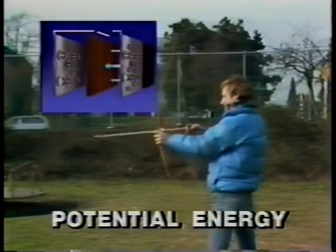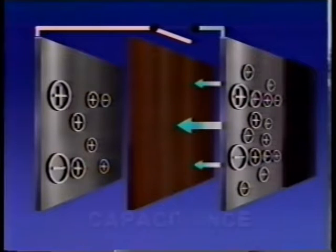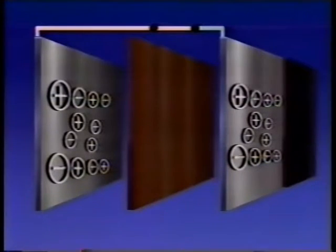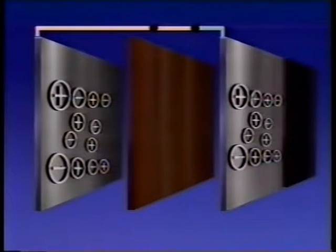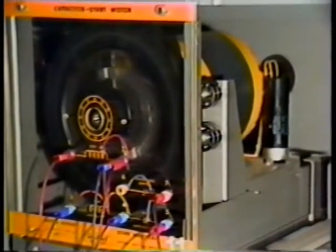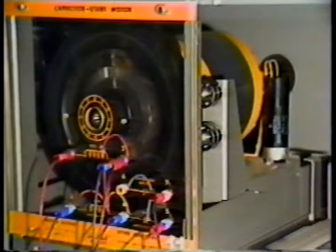It's much like the potential energy stored in a bow when it's drawn. The amount of electrical potential in a capacitor is called its capacitance. Releasing that potential — like releasing the bow — is done when the plates of the capacitor are reconnected. The charge suddenly flows back and there's once again an equal amount of positive and negative charge on each plate. It's the sudden release of this electrical potential energy that can be used to do the work of starting the motor.